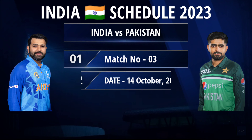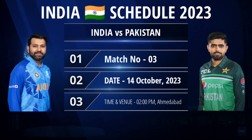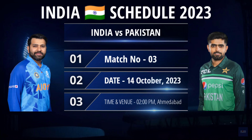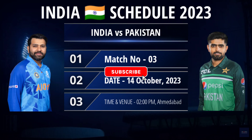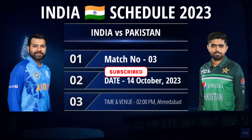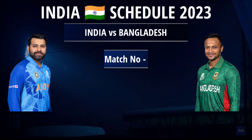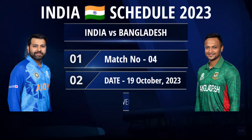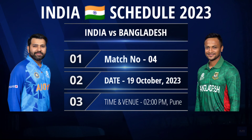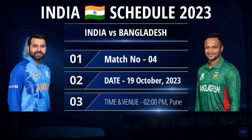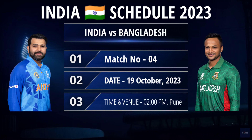India vs Pakistan, Match No. 3, Date: 14 October 2023 at 2 pm, Ahmedabad. India vs Bangladesh, Match No. 4, Date: 19 October 2023 at 2 pm, Pune.